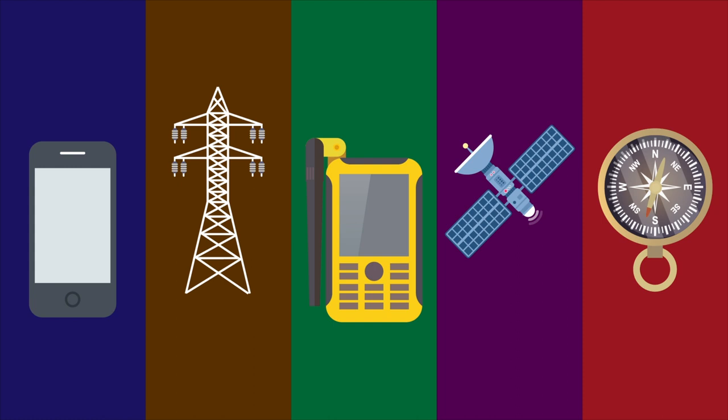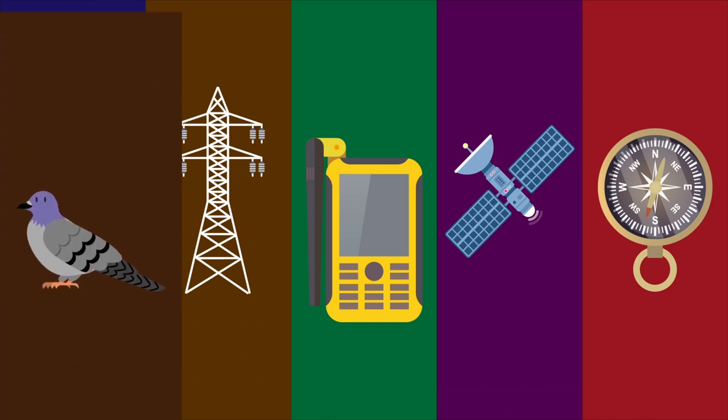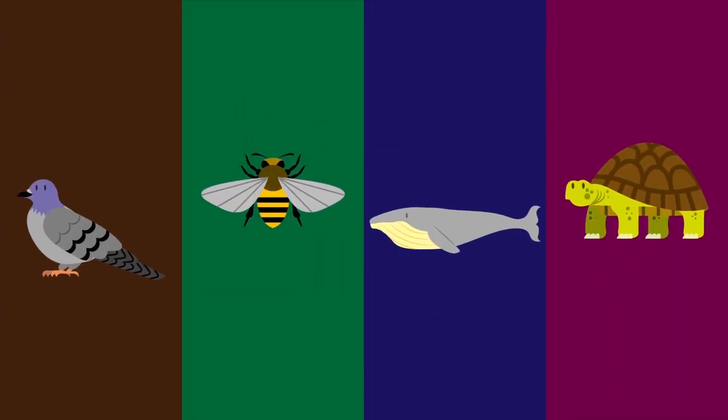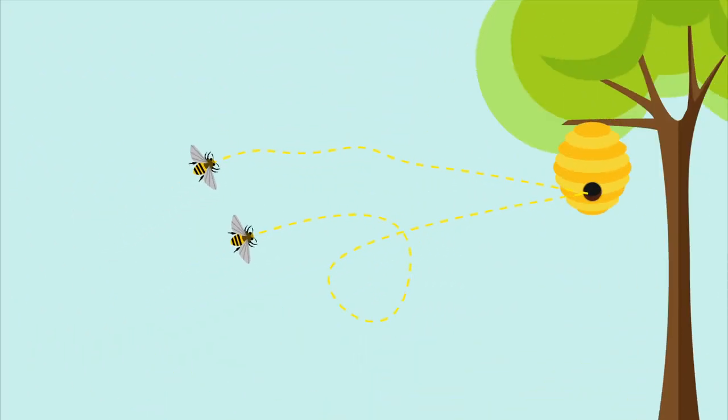Some animals also use this field to navigate throughout the Earth. Birds, bees, whales, and turtles all use Earth's magnetic field for navigation. A change in the magnetic field may cause these animals to get lost and they may end up going somewhere else where they weren't intended to go in the first place.